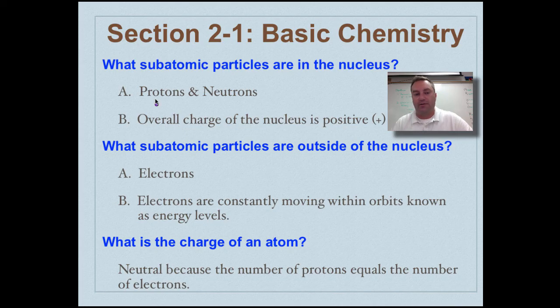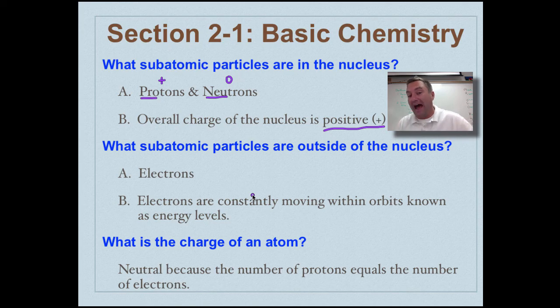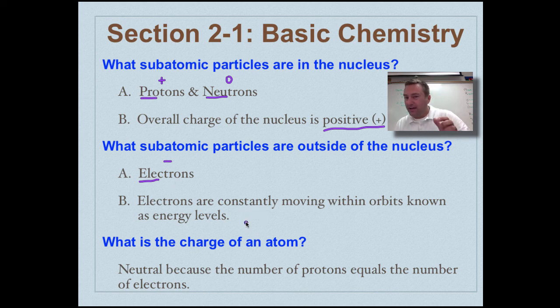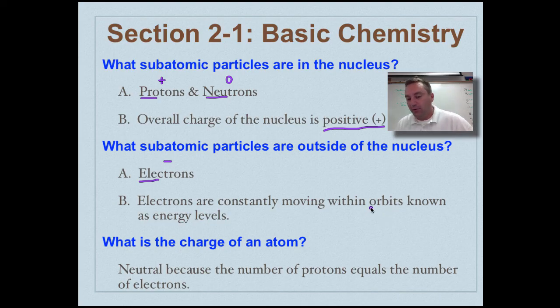Which subatomic particles are going to be found in the nucleus? Those are going to be your protons and your neutrons. Remember these guys have a positive charge, these have a neutral charge, therefore the overall charge of the nucleus is going to be positive. Which subatomic particles are going to be outside the nucleus? Those are the electrons. Remember electrons have a negative charge. Electrons have a lot of energy. They're always constantly moving around and for us we're going to say that they're in orbits known as energy levels.